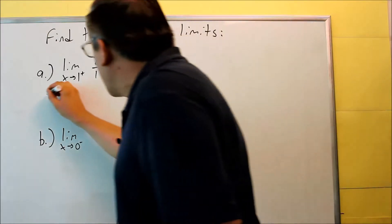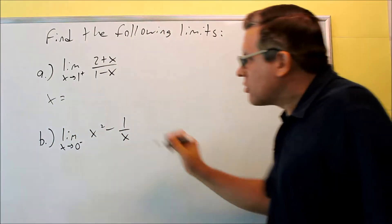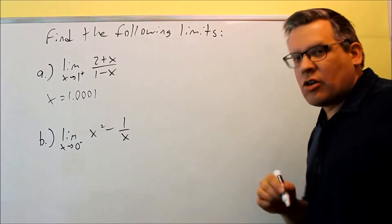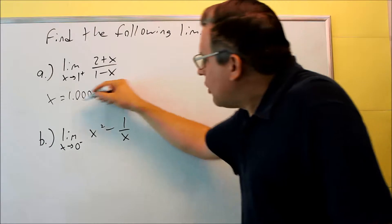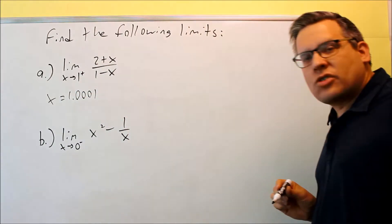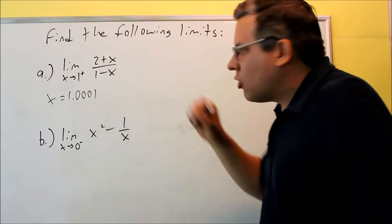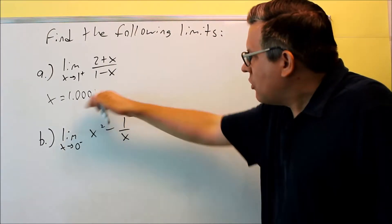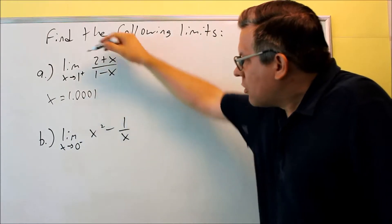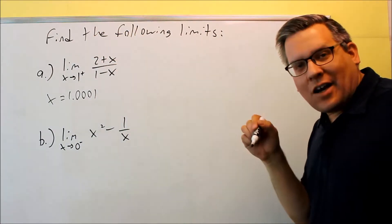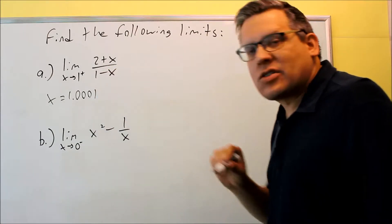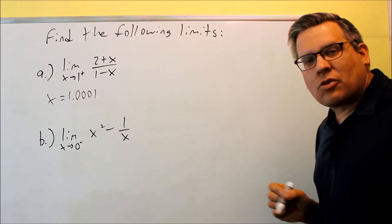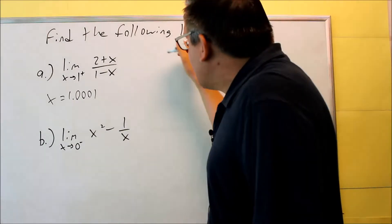For this one, we're going to let x equal numbers slightly larger than one, so I'm going to use 1.0001. I could use more or fewer zeros, but three zeros will be enough for me to tell what's happening — whether it's going to go to positive infinity or negative infinity. Notice I'm using a number that's positive and slightly larger than one. I don't want to use 0.999, because that would be something less than one. I need to look at this from the positive side, so I've got to use something slightly larger than one.